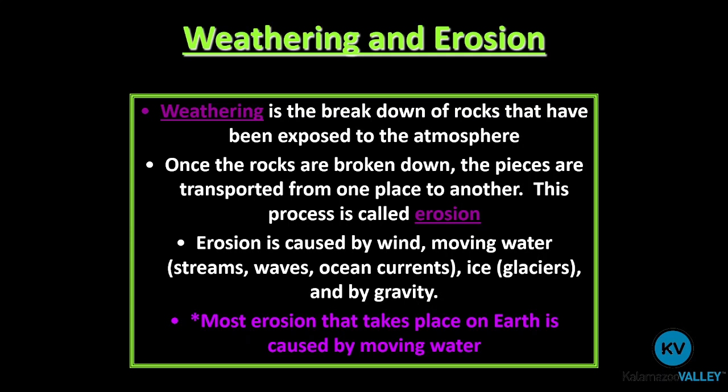As we looked at in our depositional environments activity, these modes of erosion — wind and water — can have a range of energy levels. Wind can be anything from a gentle breeze all the way up to a raging hurricane, which can move much heavier, larger pieces of sediment than a gentle breeze. The same applies to water: streams, waves, ocean currents. Many depositional environments are named after the mode of water transportation — marine, stream bed, delta, flood plain, meandering river — because the majority of erosion takes place via water.